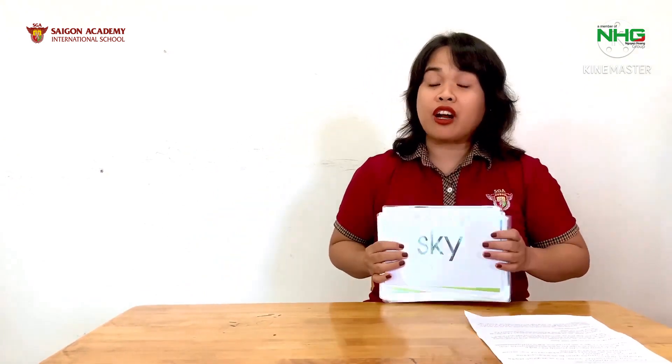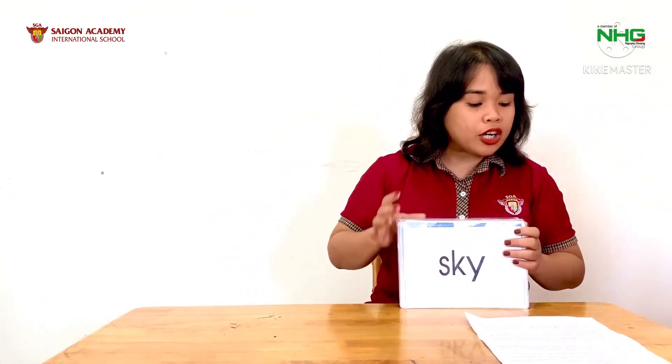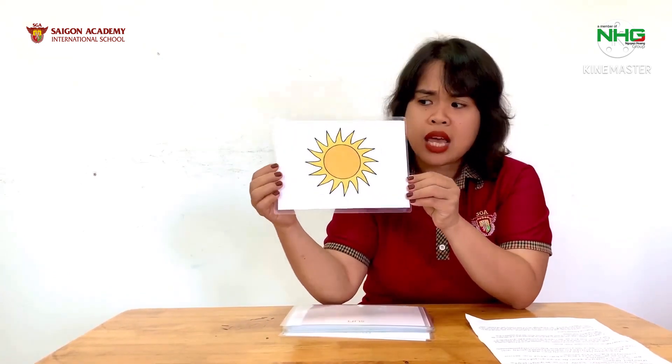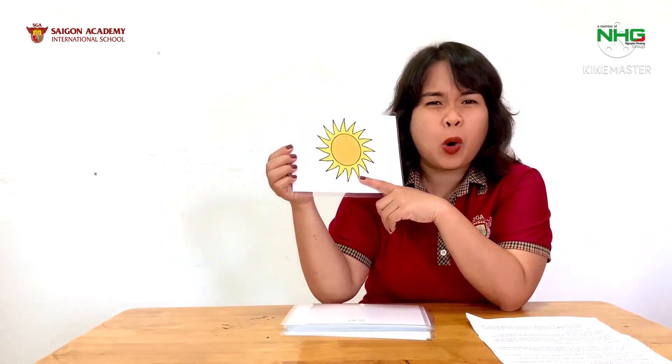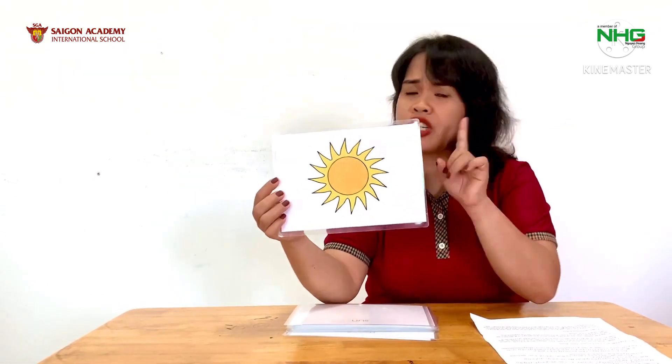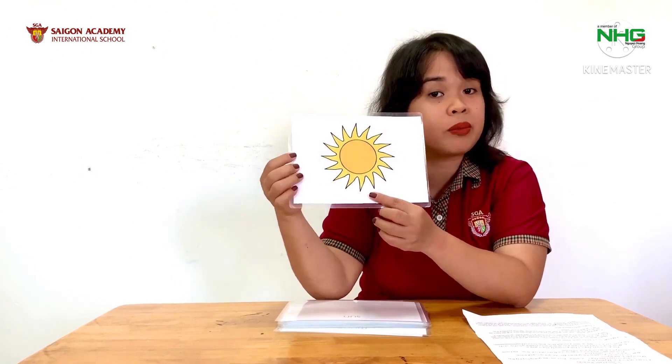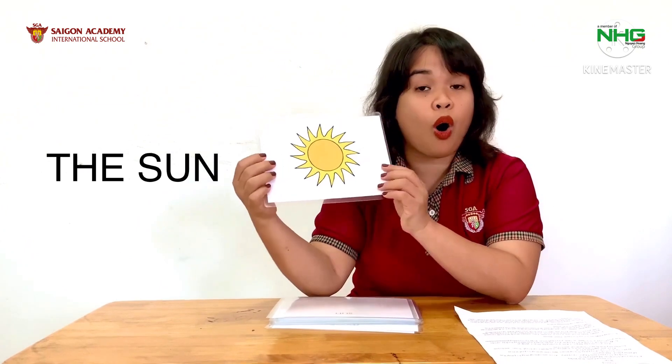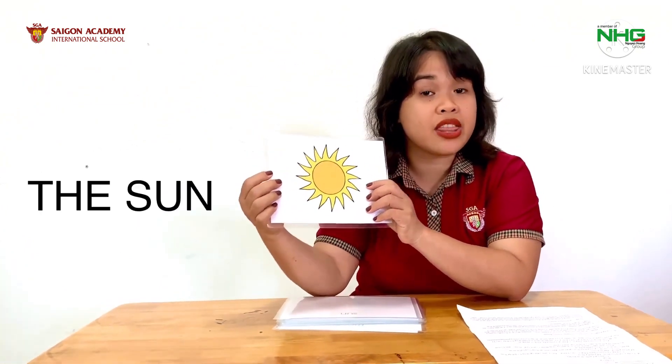Now we're going to learn our new language structures for this week. Teacher is going to show some photos and we are going to use those words to form our language structures. All our sentences will have the sun. What's this one — is this sunny or the sun? This one is the sun. It's never 'a sun,' but it's 'the sun.' Everyone say it: the sun. So all our sentences will start with the sun.